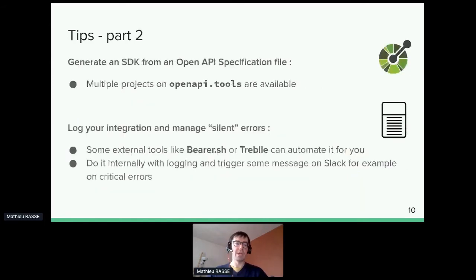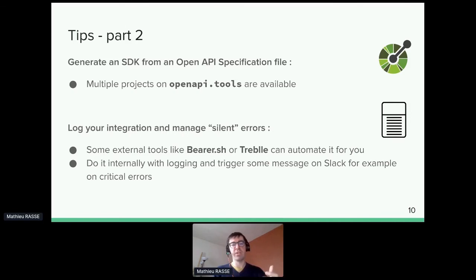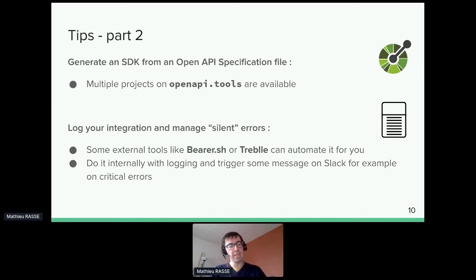You can also generate your own SDK from an OpenAPI specification file — many services use them, like Mailchimp. This pseudo-SDK can give you a better developer experience, though it acts more like an abstraction than a full-featured SDK. If you're interested in this, there's a conference this afternoon at 2 p.m. you should check out.